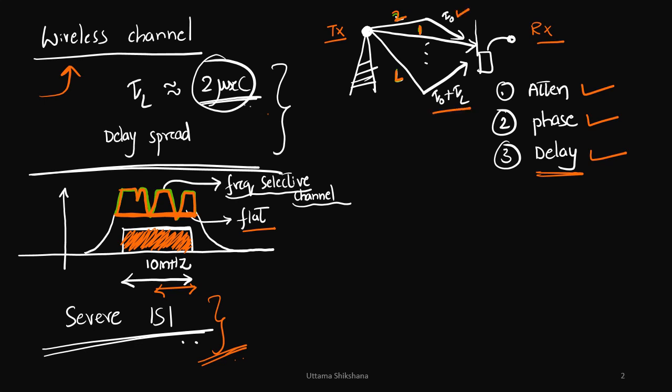Let's say first component is coming at tau 0, the last component is coming at this point. So if you take the difference, we get tau L. This tau L in wireless we call it as a delay spread. Typically it is of the order of 2 microseconds.